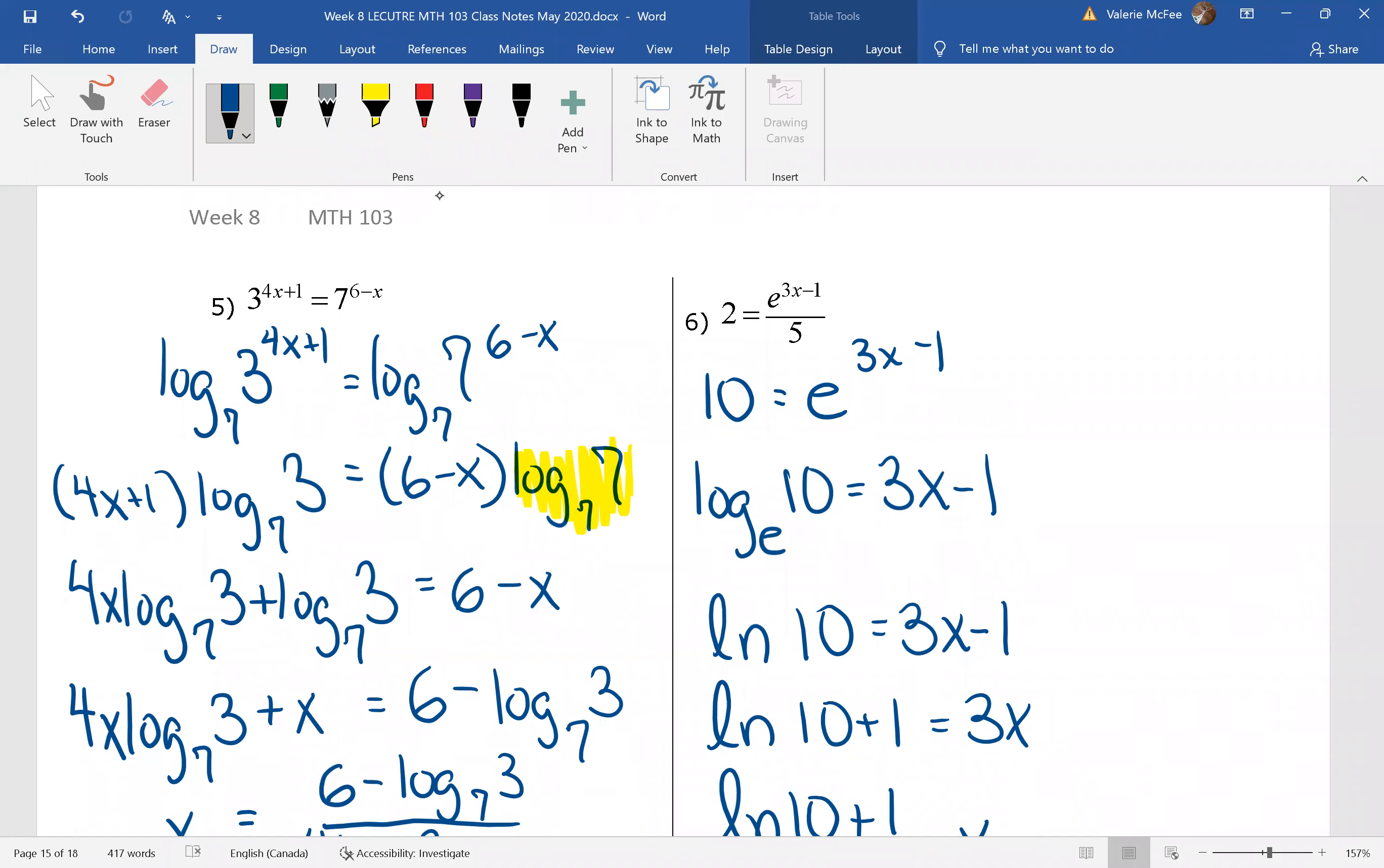So the first thing we did was multiply both sides by five to isolate that power base e. We changed it to log form. The bases are the same, so this was log base e of 10.